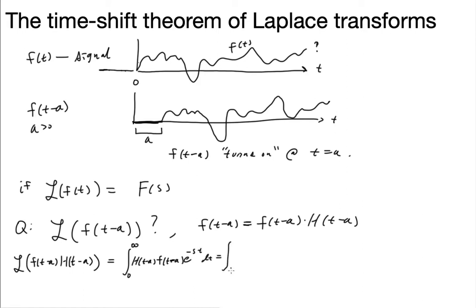All right. From here, what I want to do is actually take a u substitution of u equals t minus a. And that means du is equal to dt, but also that t is going to be equal to u plus a.